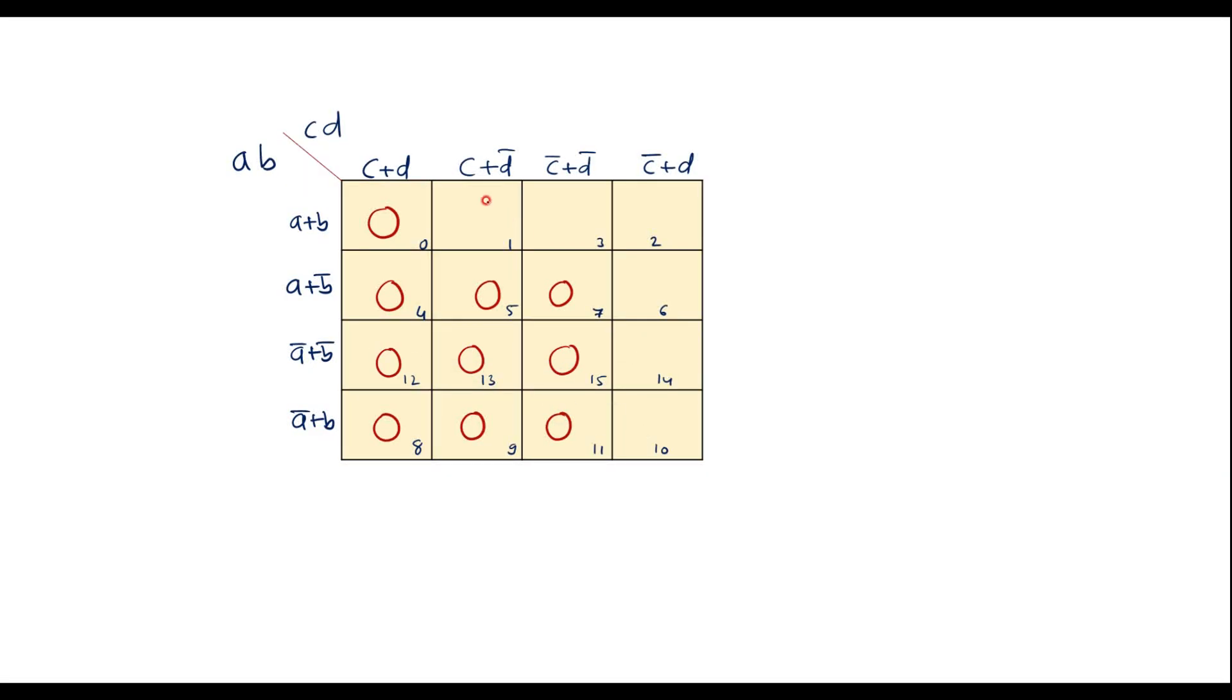So in remaining cell numbers we have to write 1. So as this is a maxterm, we have to do the grouping of zeros.